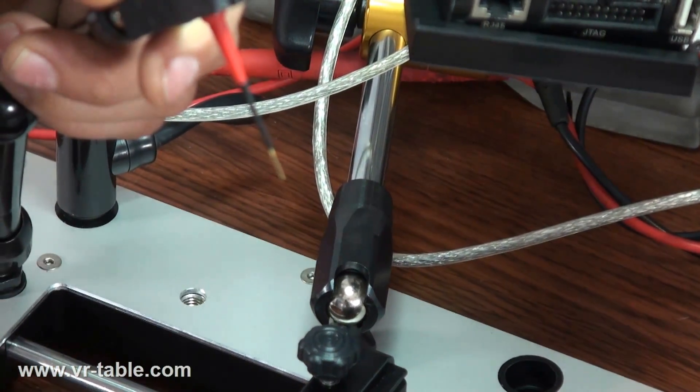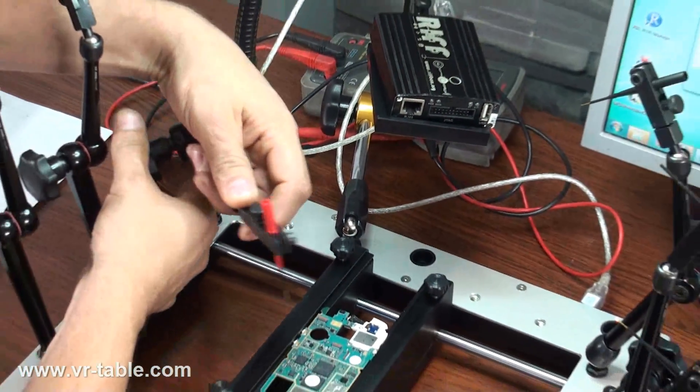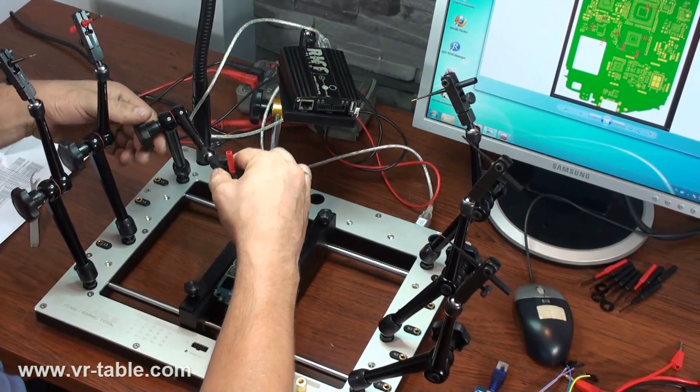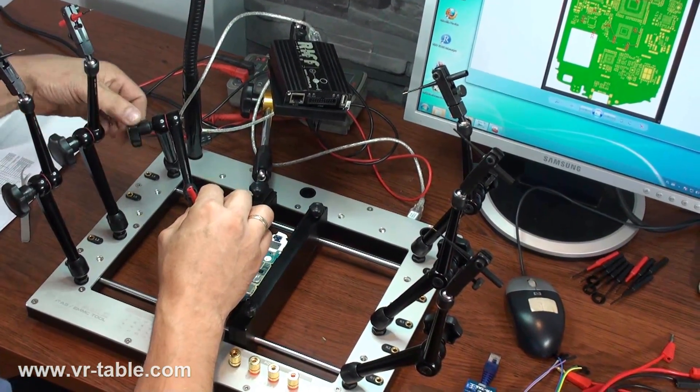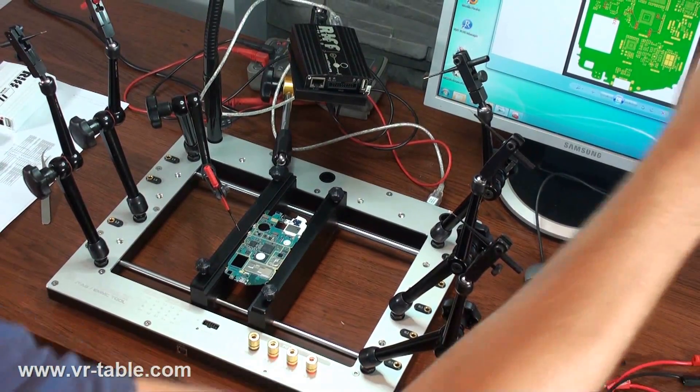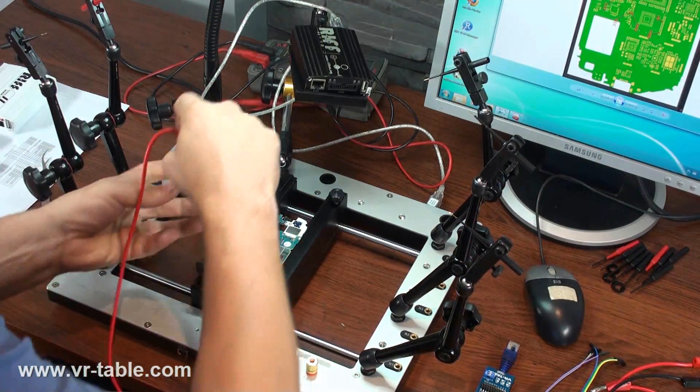These probes are sold as an option to the standard VR table, but they are best to use for eMMC ISP connections or any other places on PCB where we don't use standard tab points, but we connect directly to SMT SMD elements or CPU.